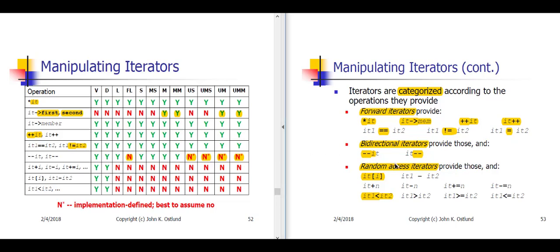And then finally, random access iterators support subscript, as we've seen. You can also subtract one iterator from another to find out how many elements exist between those two iterators. You can add arbitrary integers or subtract arbitrary integers, you can do plus-equals and minus-equals, and you can do relational comparisons on these iterators, more or less as though these iterators really were pointers.